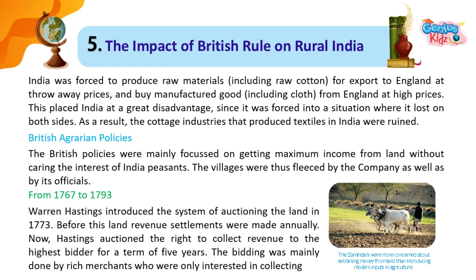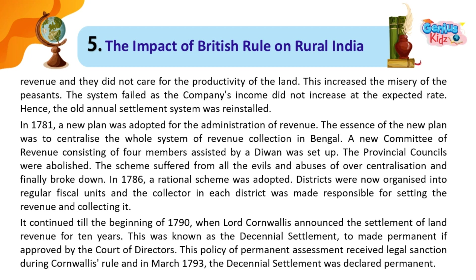Before this, land revenue settlements were made annually. Now, Hastings auctioned the right to collect revenue to the highest bidder for a term of five years. The bidding was mainly done by rich merchants who were only interested in collecting. The zamindars were more concerned about extracting money from land than introducing modern inputs in agriculture, and they did not care for the productivity of the land. This increased the misery of the peasants. The system failed as the company's income did not increase at the expected rate.